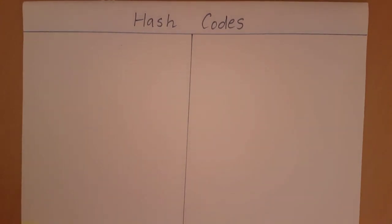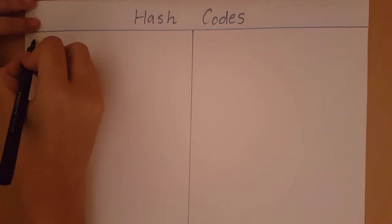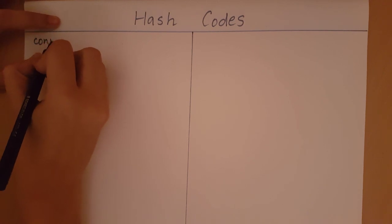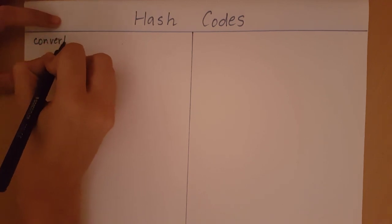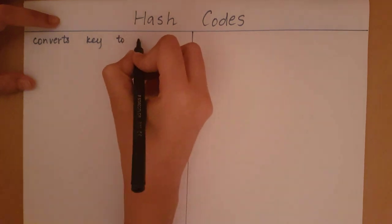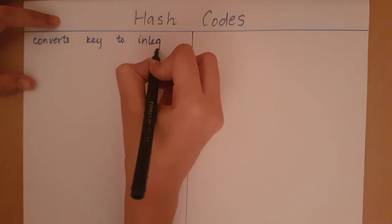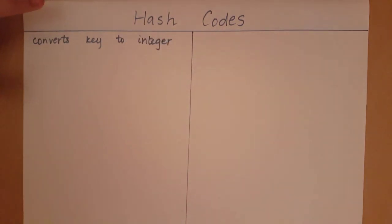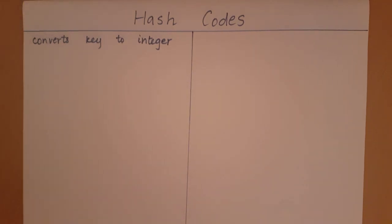Hash codes. A hash code is a function that converts a key of any type to an integer. Before we go into the types of hash codes we can implement, let's first understand what a good hash code is.